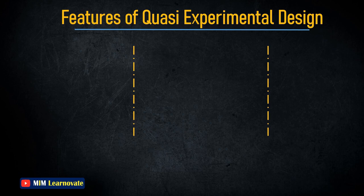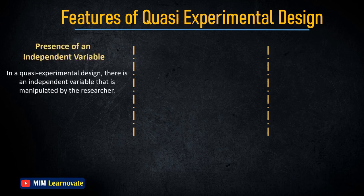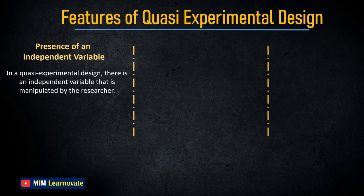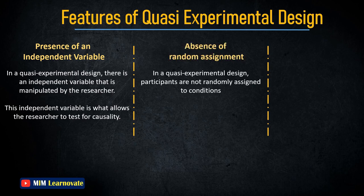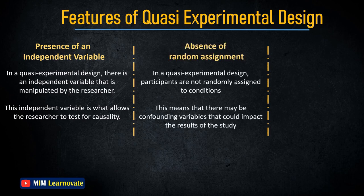Features of Quasi-Experimental Design: The key features include the presence of an independent variable that is manipulated by the researcher, which allows the researcher to test for causality. There is also an absence of random assignment — participants are not randomly assigned to conditions — which means there may be confounding variables that could impact the results of the study.